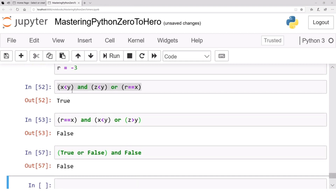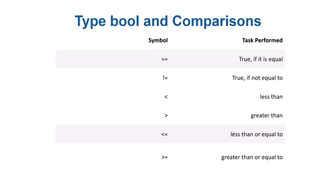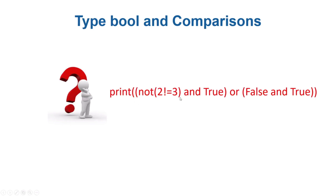The result of all these comparisons will be booleans. Here is a question: what will be the result of not(2 != 3) and true or false and true? See this for a while — pause the video if you want — and answer whether print will return true or false. I'll end this video with this question.